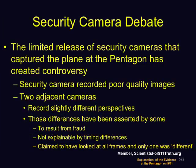The security cameras at the Pentagon that captured the plane images have been subject to a lot of controversy. The images at the distance of the plane in the background are small and fuzzy. There were two nearly adjacent cameras aimed in about the same direction with slightly different perspectives. Those differences have been asserted by some to result from fraud, not to be explainable by timing differences.